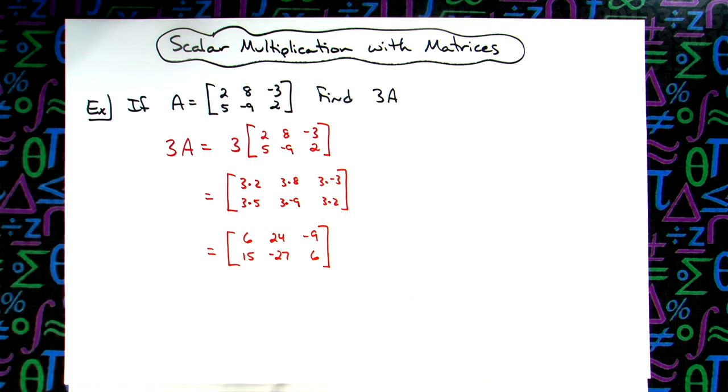So scalar multiplication is pretty straightforward. The number that's being multiplied is multiplied by absolutely everything on the inside. So definitely just one quick example there to demonstrate scalar multiplication.